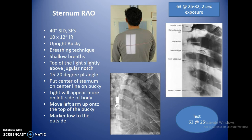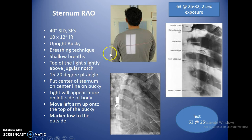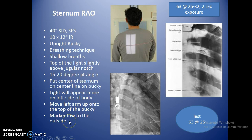For the RAO sternum, use 40 inches SID with a 10 by 12 IR lengthwise. Use a breathing technique to blur out the lungs so the sternum's scalloped pattern, xiphoid tip, and manubrium are clearly visible. The patient angle is only 15 to 20 degrees with no tube angle. Center the sternum on the center line of the bucky, using the clavicles as a guide. Move the left arm up on top of the bucky to get it out of the way.